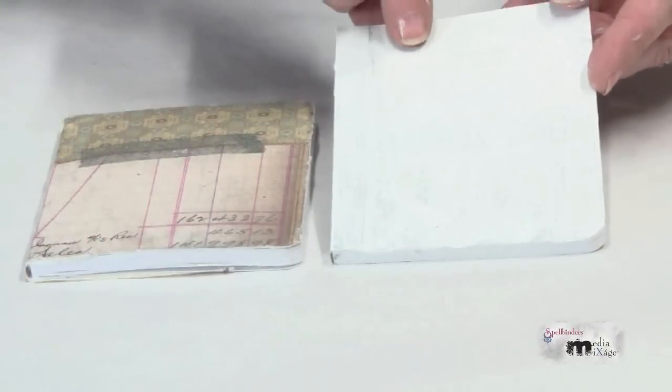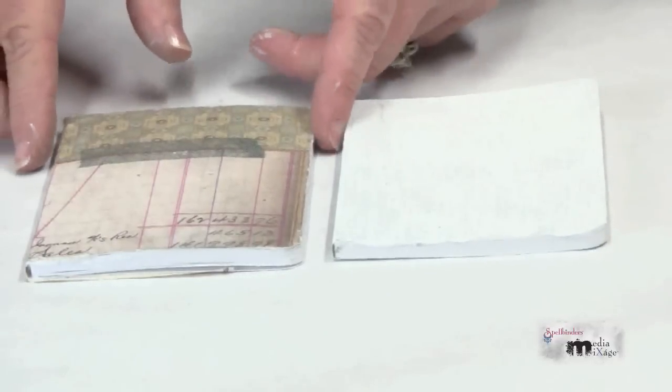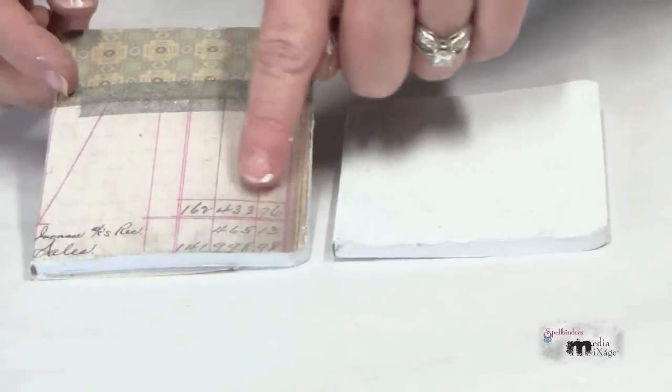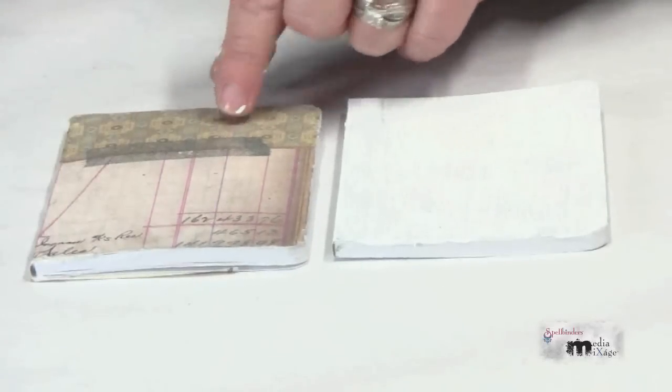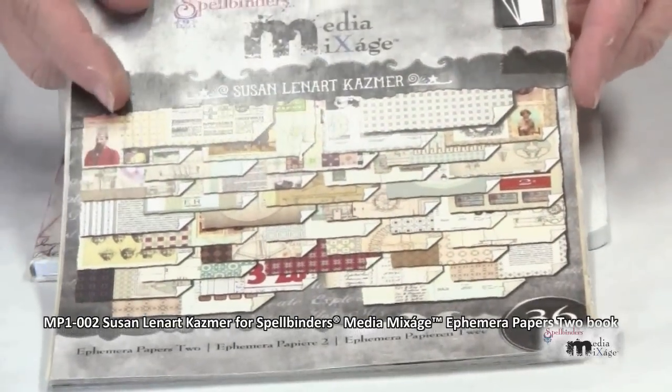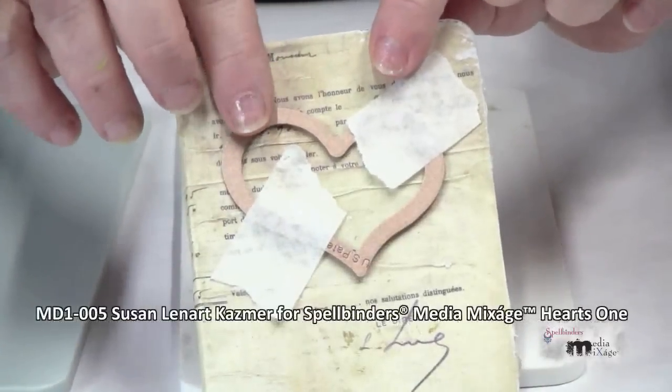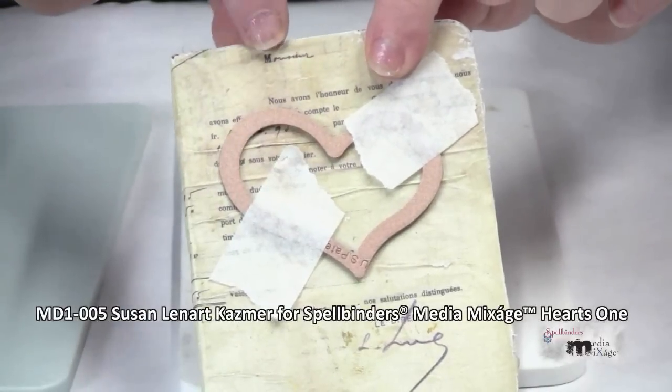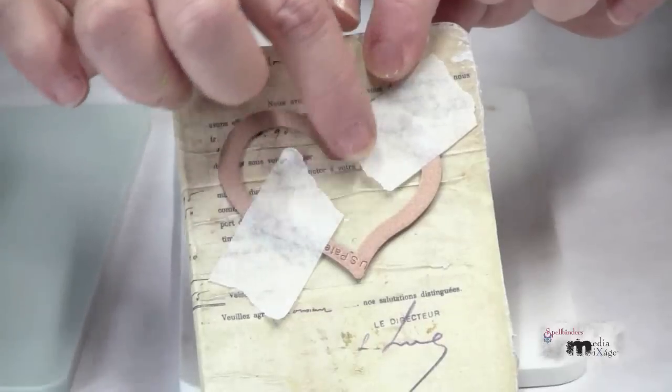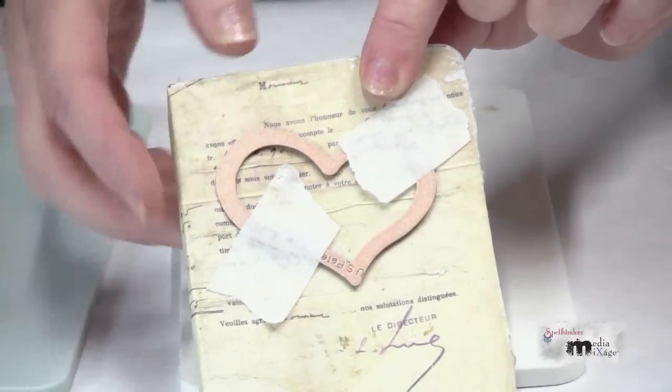To begin, I covered my journal with some white gesso and I decoupaged paper onto the cover using the ephemera papers to book. I'm going to cut a window into my journal cover, so I've positioned my die template and taped it down onto my cover.